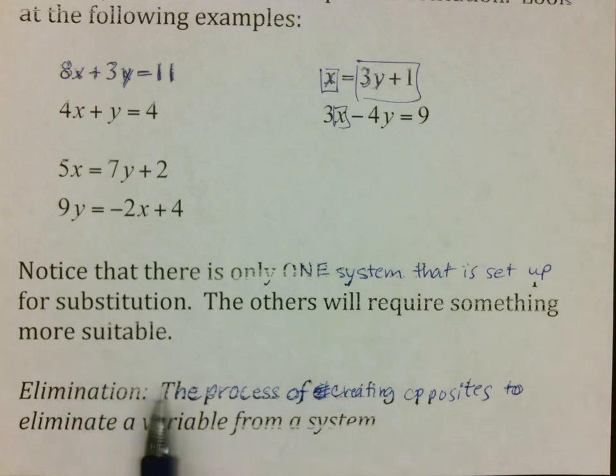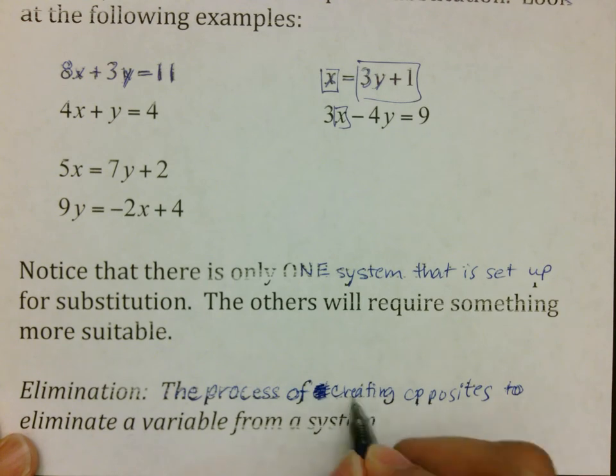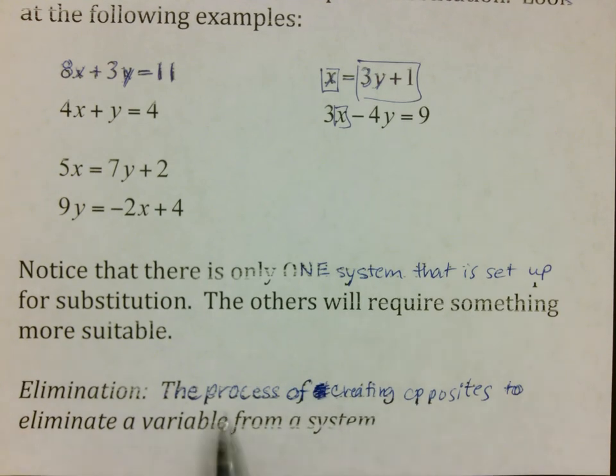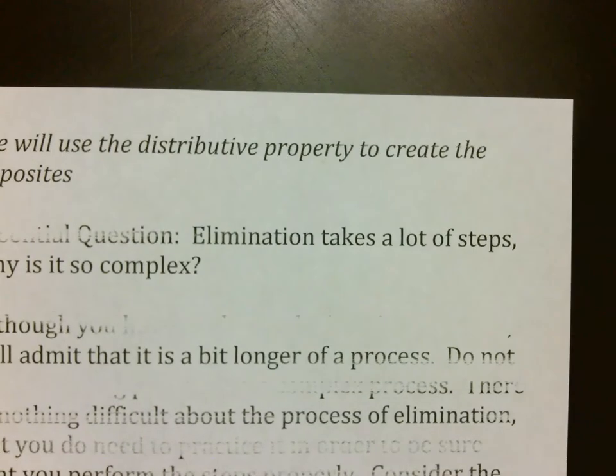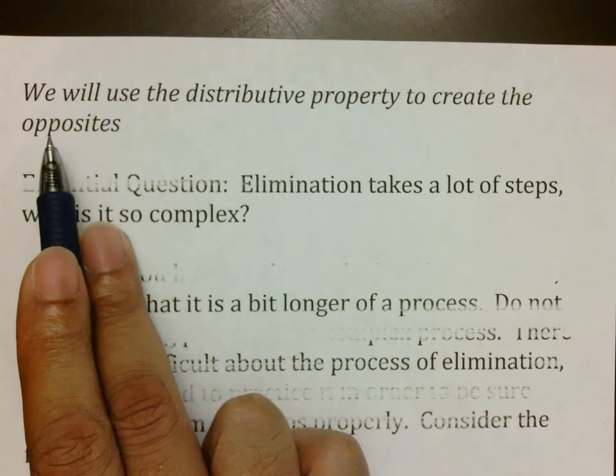Elimination is the process of creating opposites to eliminate a variable from a system. We're going to use distributive property to create opposites. The essential question that people have is elimination does take a lot of steps. Why is it so complex?